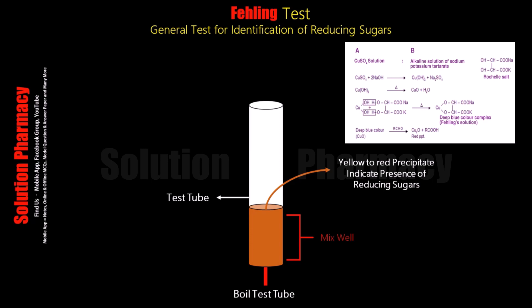In this way we can identify the reducing sugar in our sample by performing Fehling's test. Next, the principle of Fehling's test — how does the reddish brown precipitate form in the presence of reducing sugar?